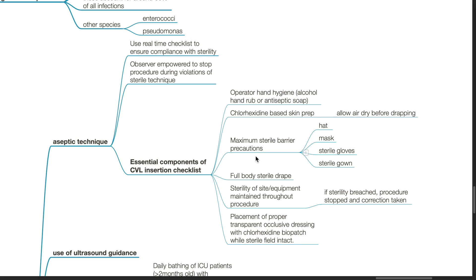Maximum sterile barrier precautions include head mask, sterile gloves, and sterile gown, plus a full body sterile drape. Sterility of the site and equipment must be maintained throughout the procedure. If sterility is breached, the procedure should stop and correction taken. A proper transparent occlusive dressing with chlorhexidine BioPatch should be placed while the sterile field is intact.